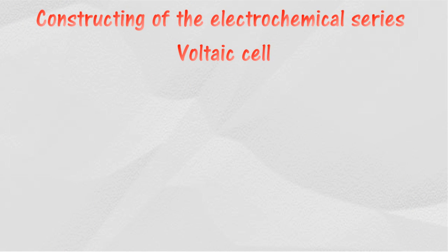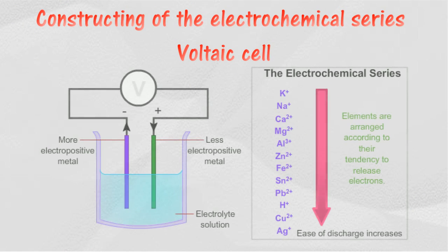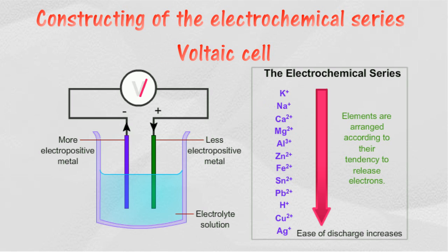A voltaic cell is a type of cell that produces electrical energy from chemical reactions that occur inside it. When two different metals are immersed in an electrolyte solution, a potential difference is generated. The further apart the positions of the two metals in the electrochemical series, the larger the value of cell voltage that is produced.